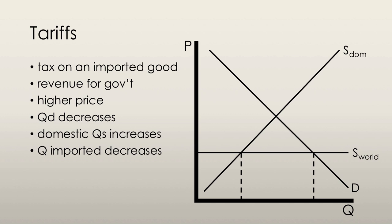The effect of a tariff can be shown on the graph as follows. Assuming we start from a barrier-free importing industry as shown on the graph, when the tariff is imposed, the world supply curve shifts upwards by the amount of the tax.